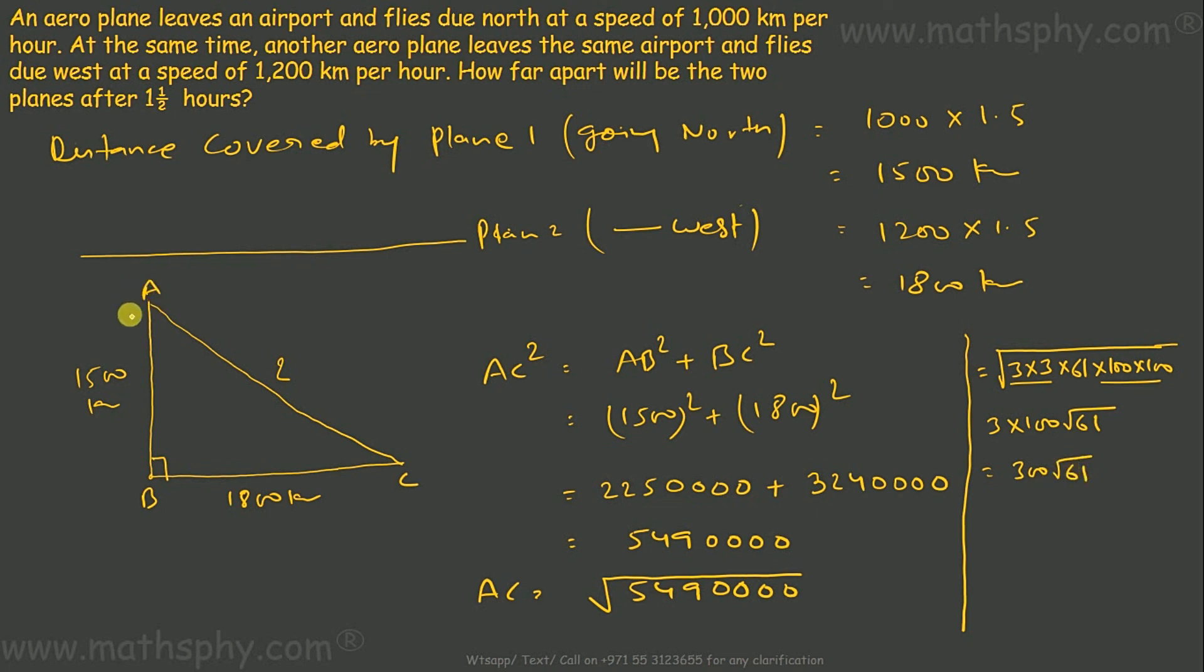So the distance between this plane headed north and this plane headed west is 300 root 61 kilometers. That's the answer.